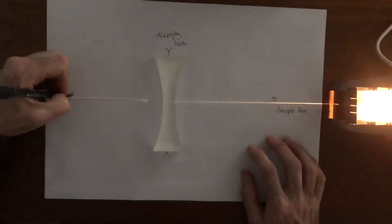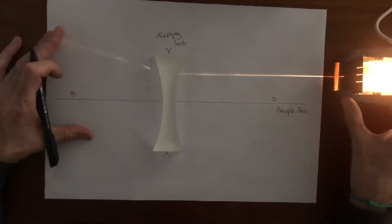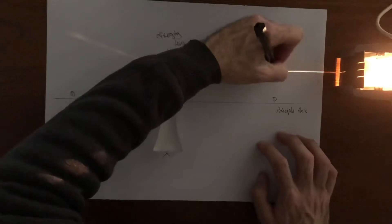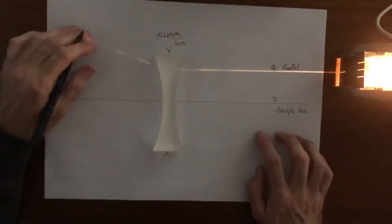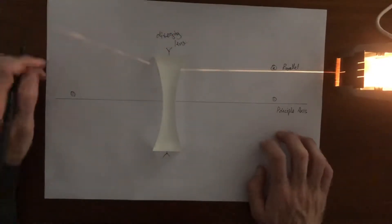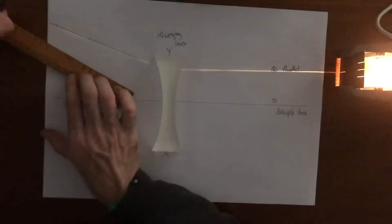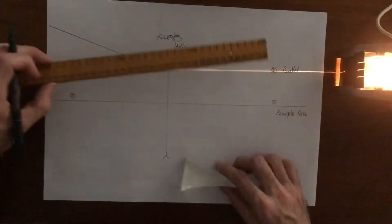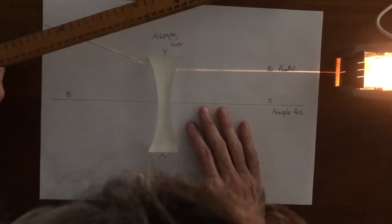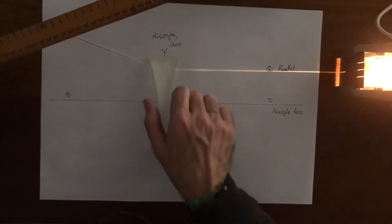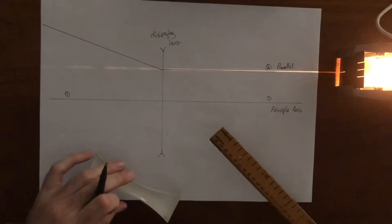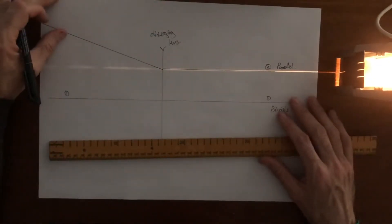Ray number one goes all the way through the center like that. Ray number two is going to be parallel to the principal axis — it comes in and then it comes out diverging. So this ray is heading off in this direction. It's coming in parallel to the principal axis and going out as a diverging ray.